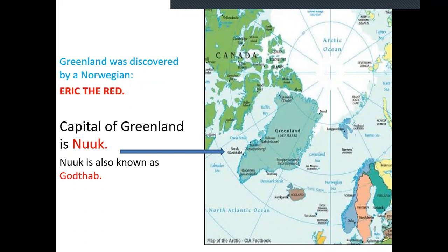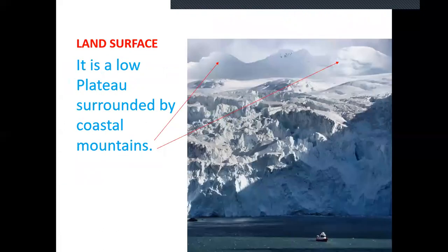The capital of Greenland is Nuuk, also known as Gothab. It is a low plateau — plateau means a high land having a flat top — but Greenland is a low plateau. It is surrounded by coastal mountains.